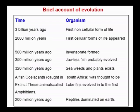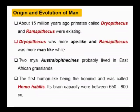A fish called Coelacanth, caught in South Africa, was thought to be extinct. These animals, called lobe-finned fish, had fins that evolved into the first amphibians. Two hundred million years ago, reptiles dominated on Earth. Later, birds evolved from the reptiles and mammals were evolved from the birds. First, shrew-like mammals appeared.